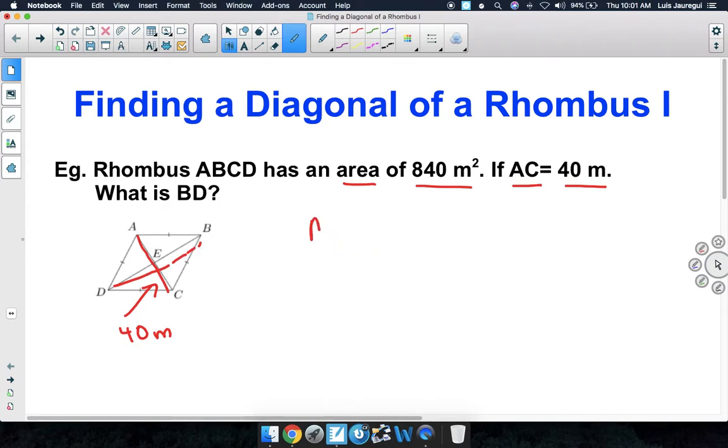So we're going to use the formula area is equal to 1 half times diagonal 1 times diagonal 2. And let's substitute in what we know.